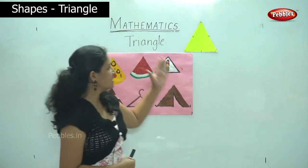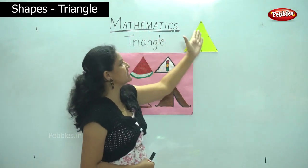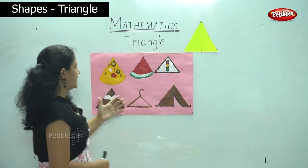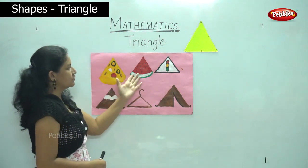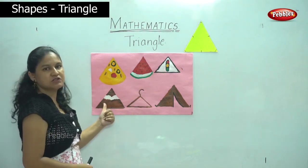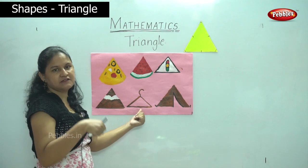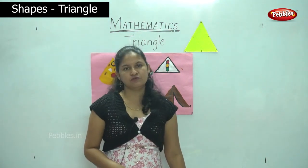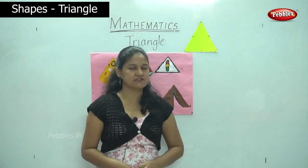As I said earlier, a triangle has three sides and three corners, and these are the examples of a triangle: the pizza, the watermelon, the traffic signal, the hills or the mountains, the hanger that you use to hang your clothes, and the tent that you use when you go mountaineering.